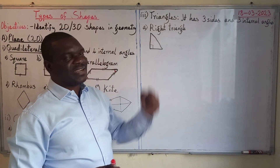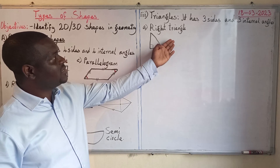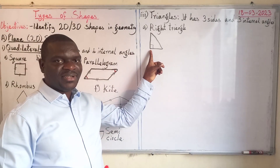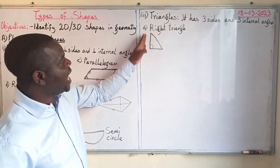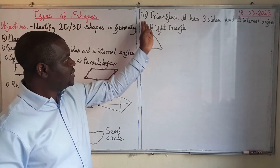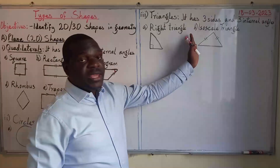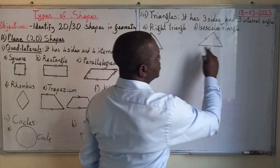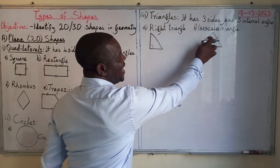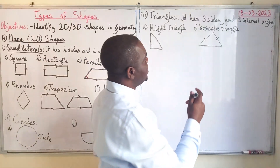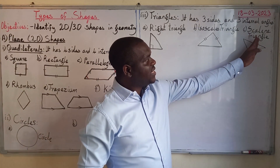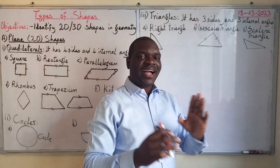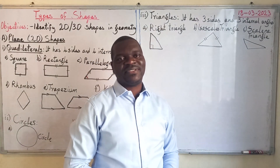The first type is the right triangle, which has a right angle. It has a height, a base, and a hypotenuse. Next is an isosceles triangle — with an isosceles triangle, two sides are equal.